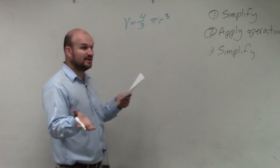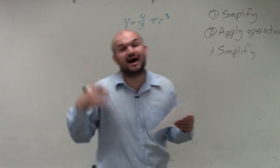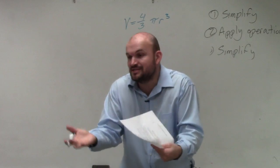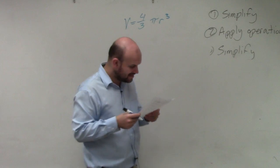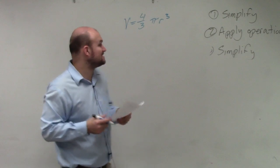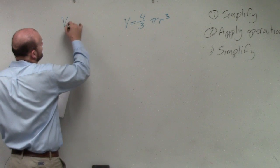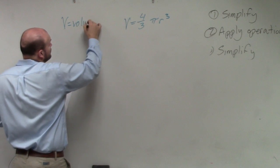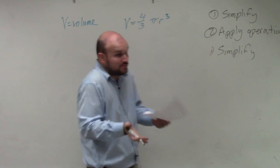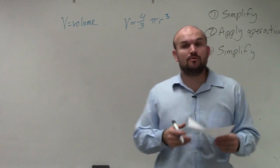So the next thing is a lot of times you have to identify the variables, right? What do these variables represent? I like your bird, by the way. So V represents the volume, the volume of the sphere. And r represents the radius.